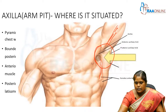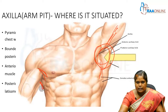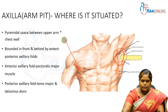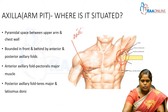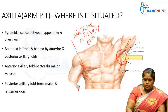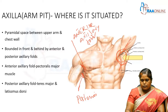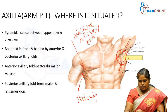This space is a pyramidal shaped space which is bounded by the anterior axillary fold and the posterior axillary fold. This is the anterior axillary fold and this is the posterior axillary fold.